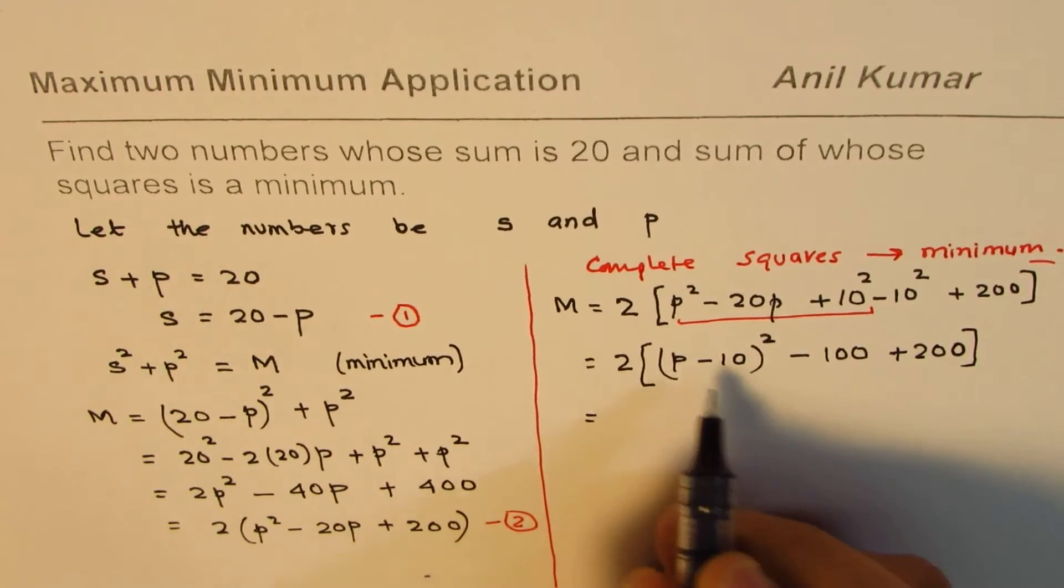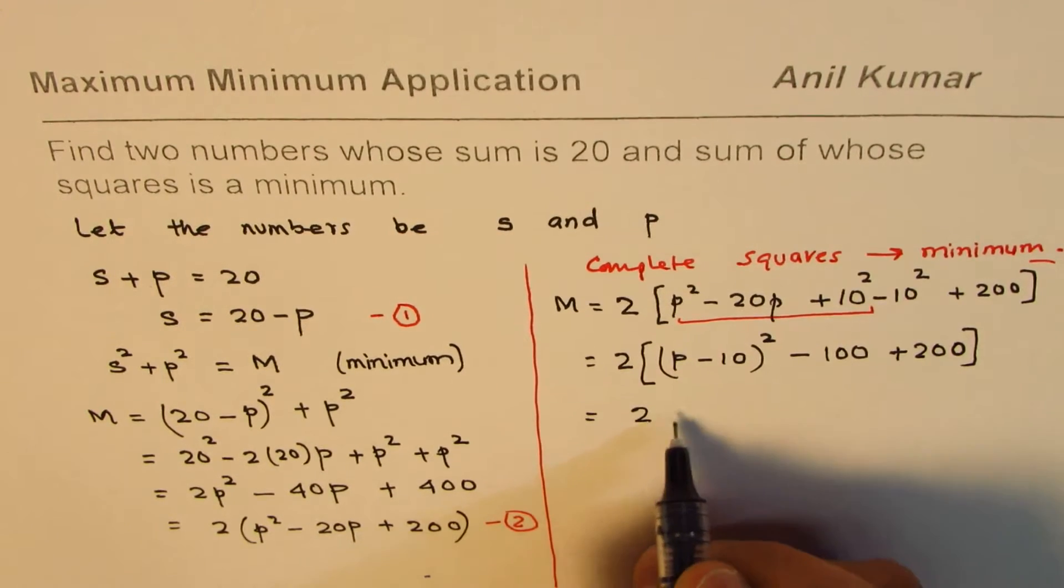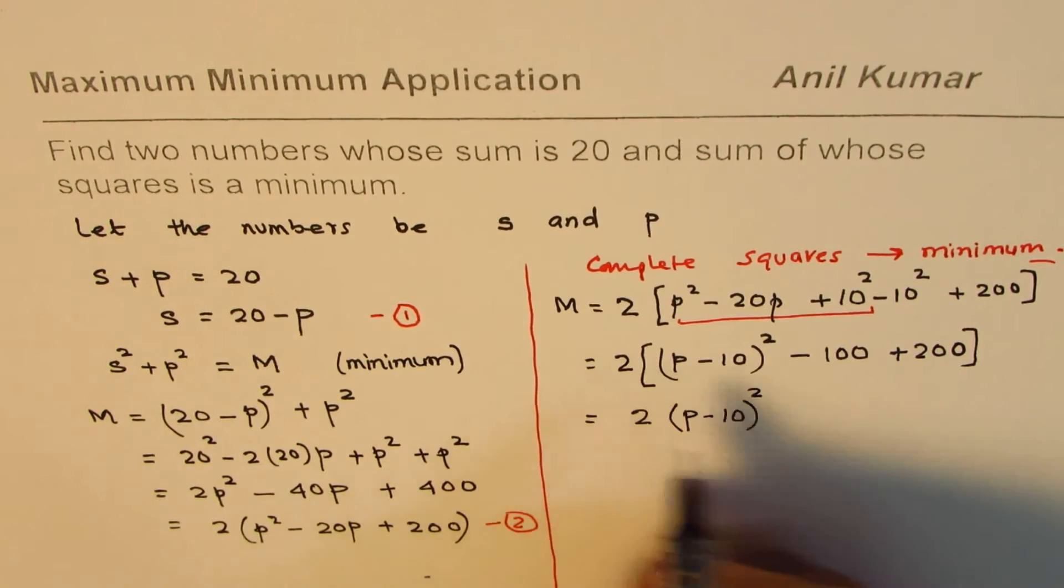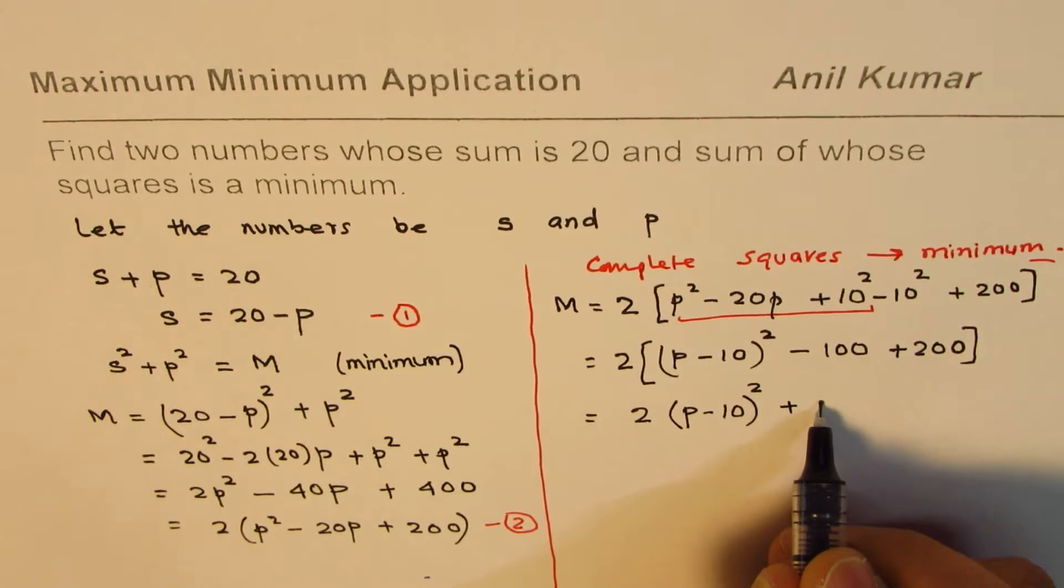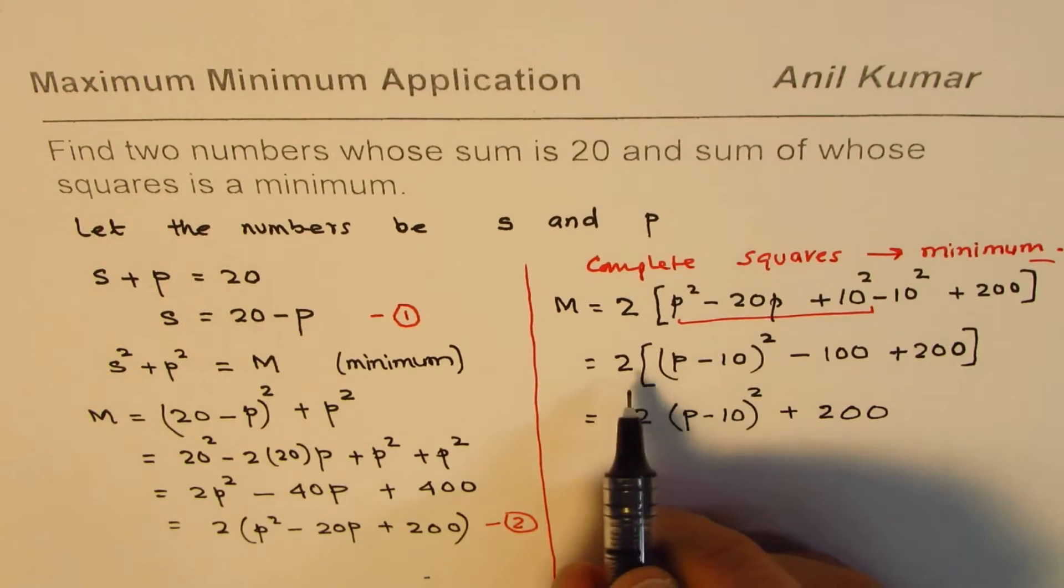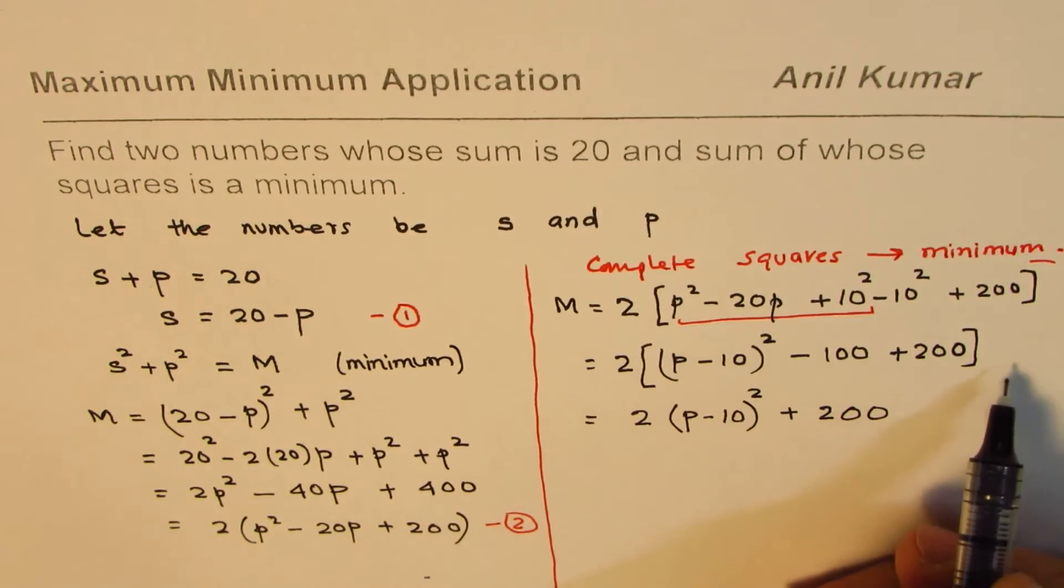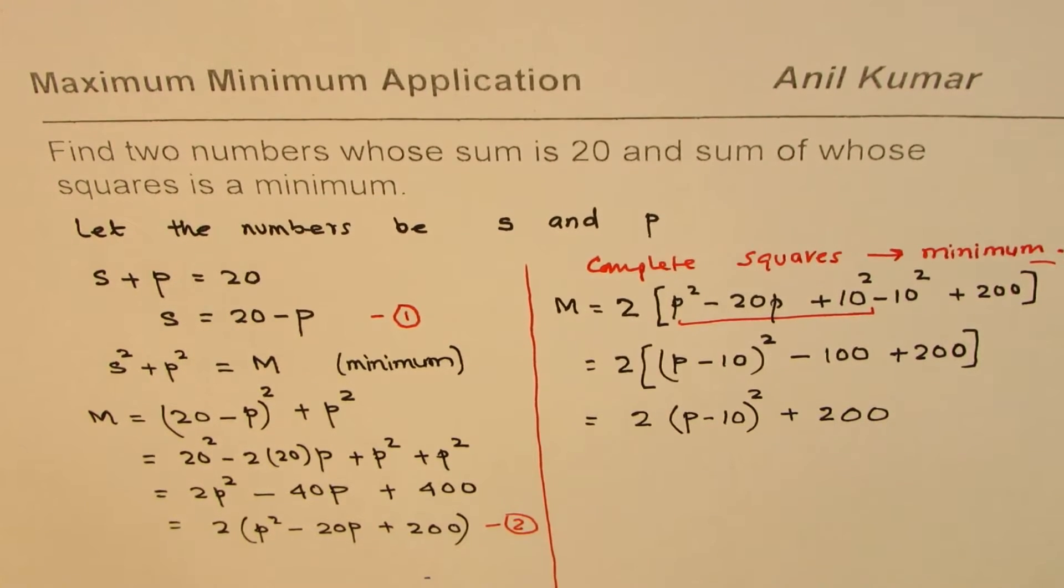Now we can open this bracket, so we get 2(p - 10)². That is 100 times 2, so that gives us 200. Minus 100 from 200 is 100, and we are multiplying by 2, so this is a parabola which opens upwards.